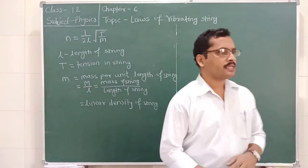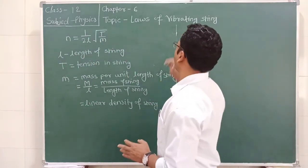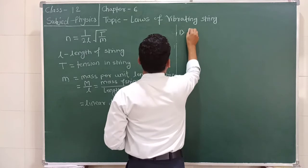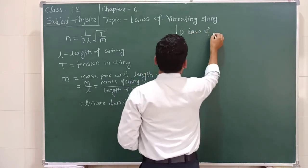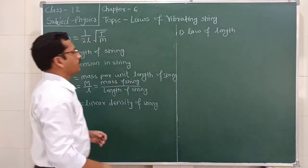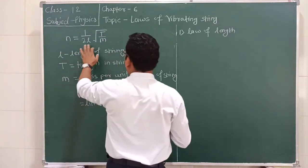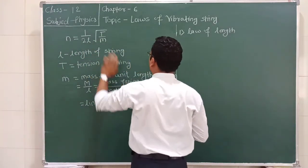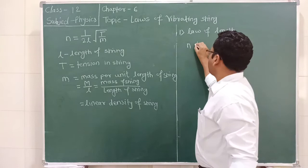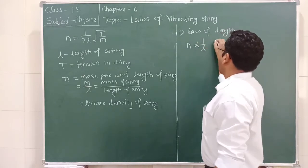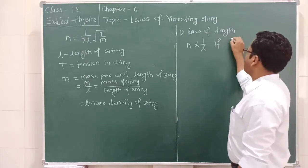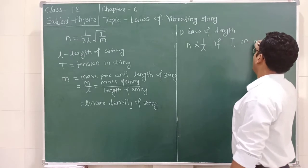There are three laws of vibrating string. The first is the law of length. If tension and mass per unit length, or linear density, are constant, then the fundamental frequency n is inversely proportional to length. This is possible only when tension T and mass per unit length are constant.